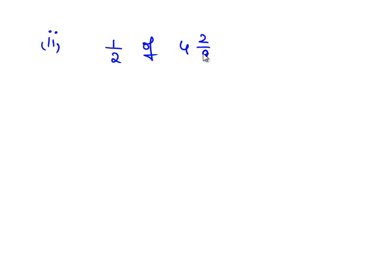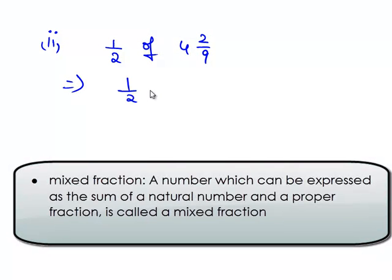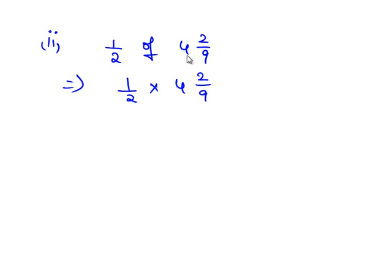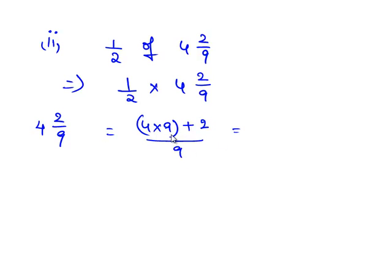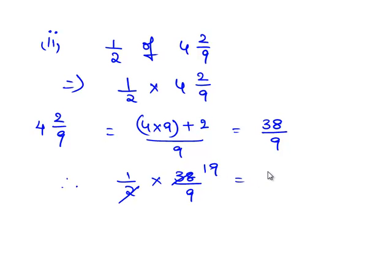Now let us consider the second bit. Here we need to find 1/2 of 4 2/9. 1/2 of 4 2/9 is nothing but 1/2 times 4 2/9. Let us first convert the mixed fraction 4 2/9 into an improper fraction: 4 2/9 = (4 × 9 + 2) / 9 = (36 + 2) / 9 = 38/9. The expression becomes 1/2 × 38/9. Since 2 goes into 38 nineteen times, the fraction is 19/9. Therefore 1/2 of 4 2/9 is 19/9.